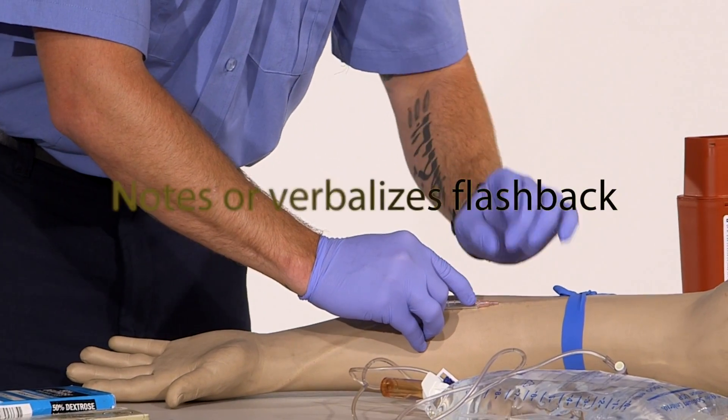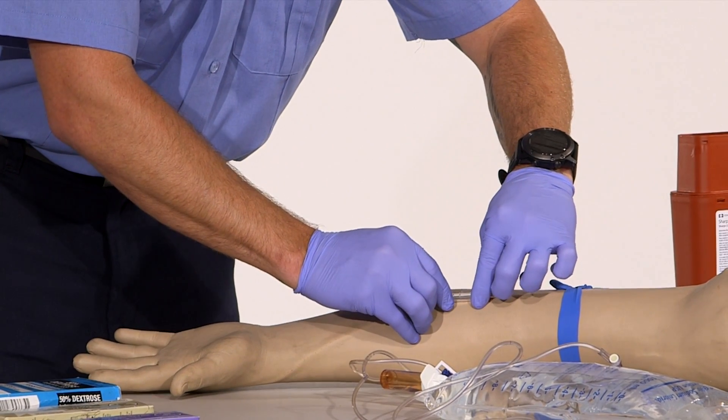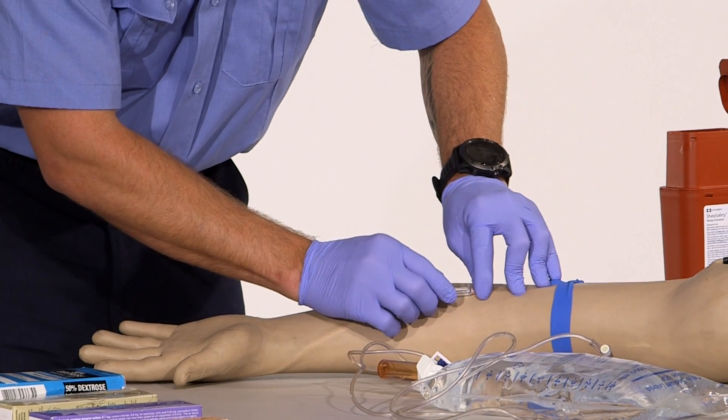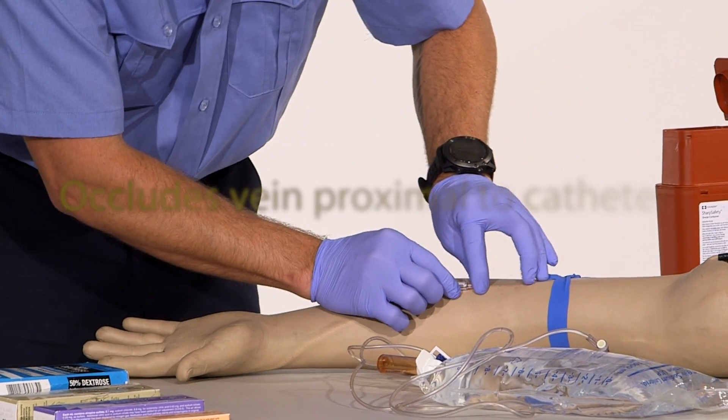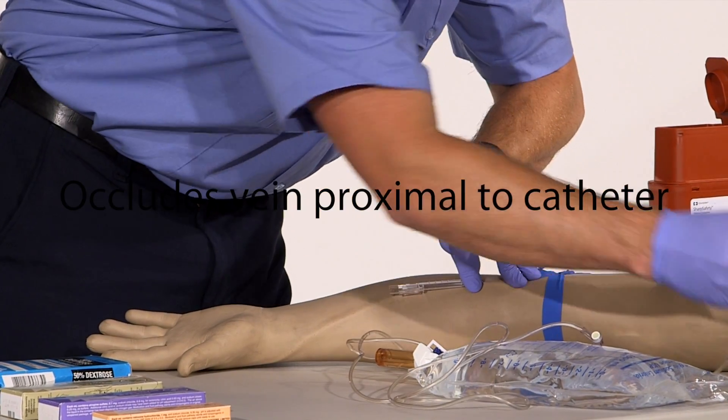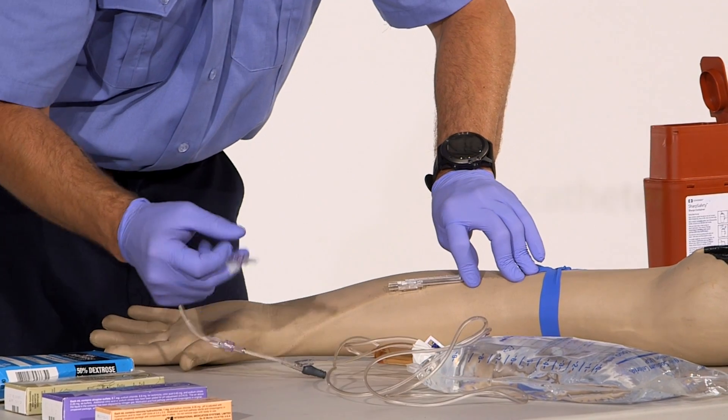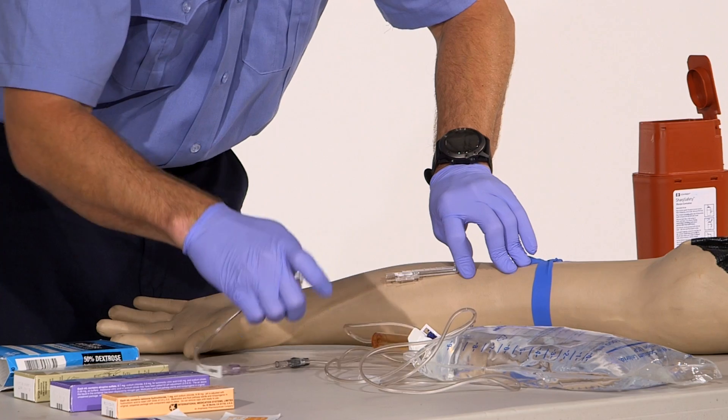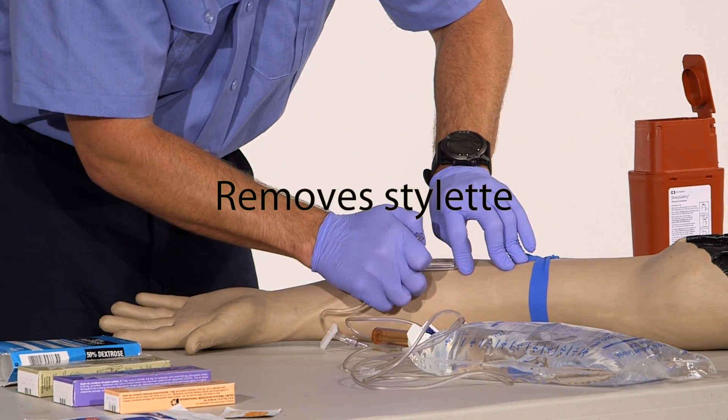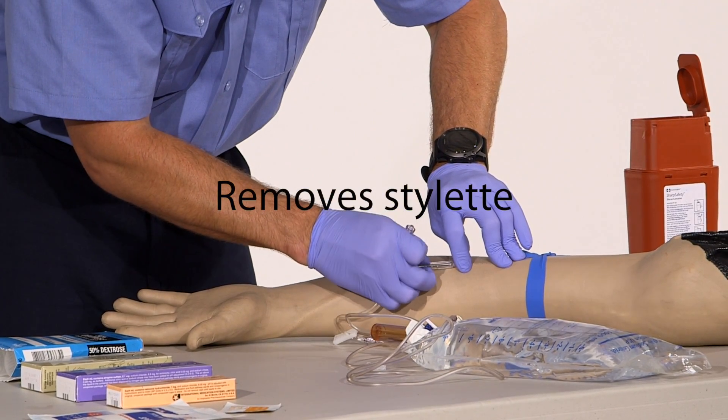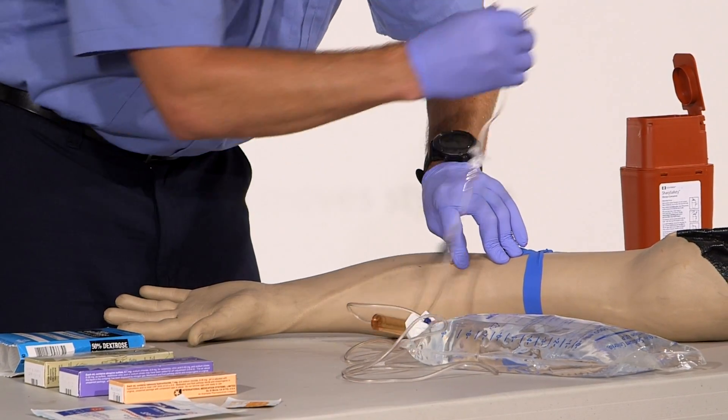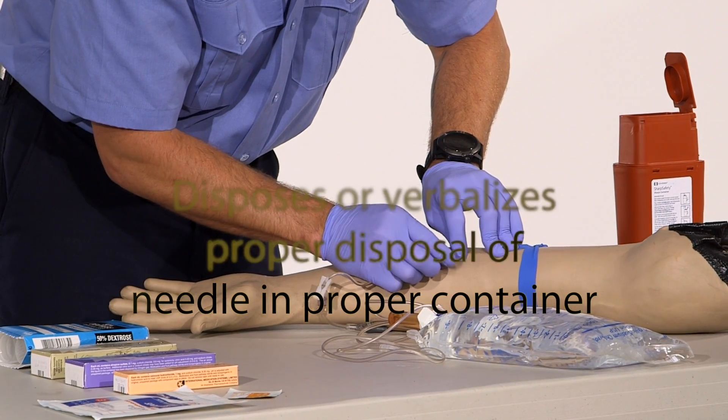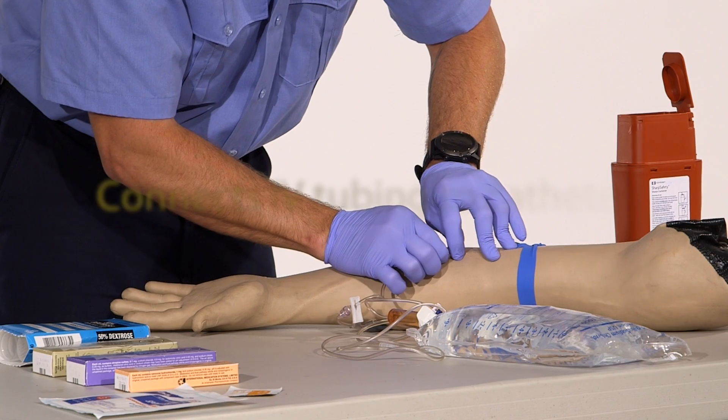I'm going to make sure that I keep secure hold of this. And occlude the vein. Keep the site clean. Remove the needle, place it into the sharps container, and get the drip set secured on there.